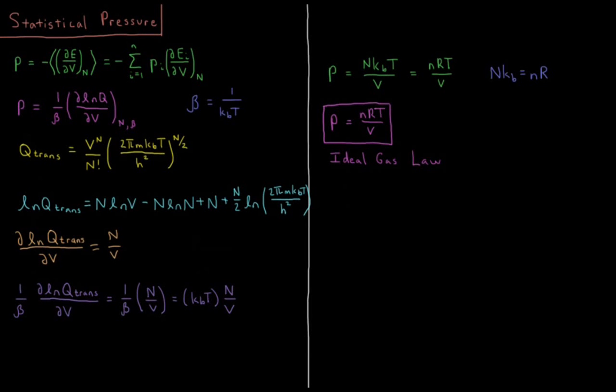This video will discuss pressure in statistical mechanics. From the previous video on heat and work in statistical mechanics, we showed that the pressure of a system is equal to the negative expectation value of the partial derivative of the energy of the system with respect to volume at constant number of particles.